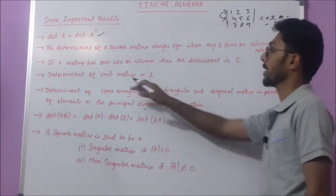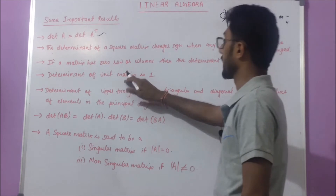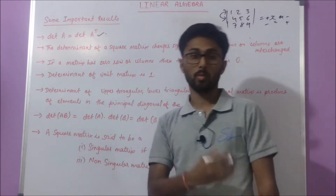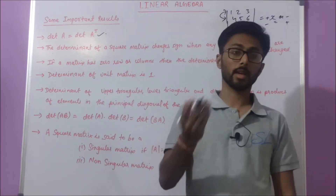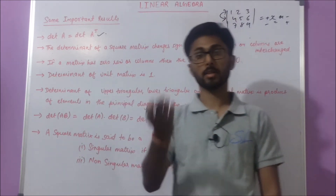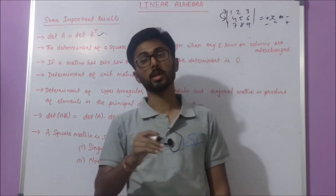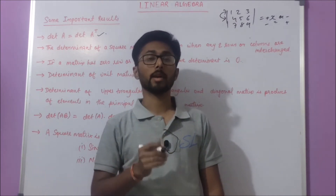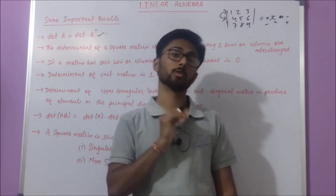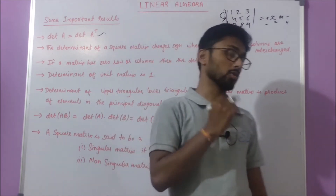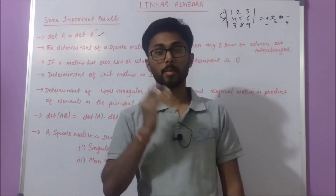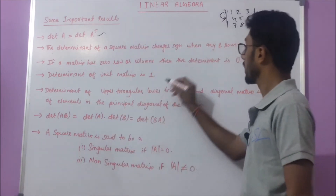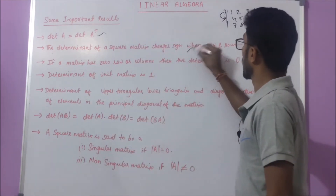The determinant of a unit matrix (identity matrix) is always one. In an identity matrix, all the principal diagonal elements are equal to one, so its determinant is one.